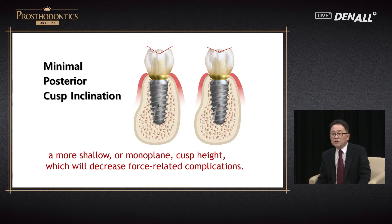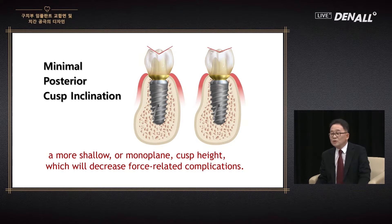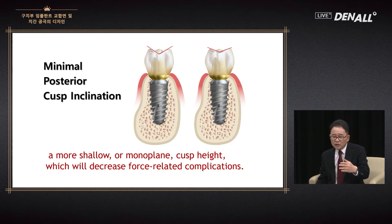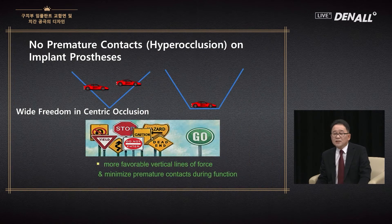The cusp inclination needs to be reduced. If the patient is comfortable after delivery of the prosthesis, we need to think about whether the cusp height is appropriate or if it is delivered as monoplane. For the implant placement, we need to communicate with the patient for satisfactory occlusion. This is my favorite concept — the wide freedom in centric occlusion, from an old article.